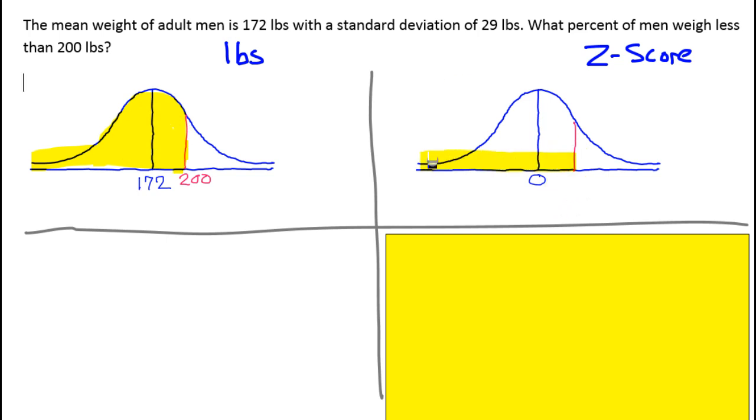That'll correspond to the same situation on the Z-score diagram. Some of these numbers will be different between the pounds and the Z-score, but the percentages will be the same. That's why this is so useful.